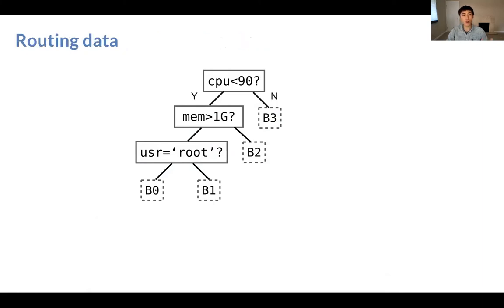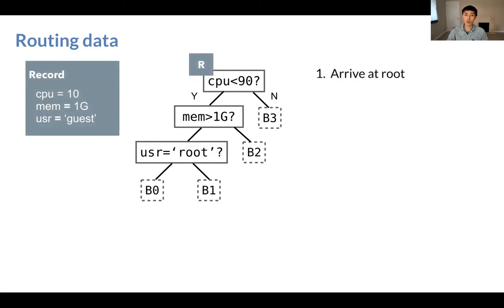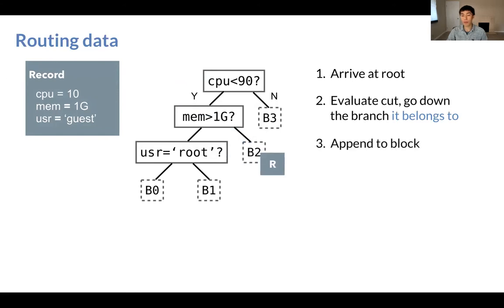The fundamental operation to do so is routing data records. Say we have a record that looks like this. The first step is to arrive at the root and check against the root cut, CPU less than 90, and this will evaluate to either true or false, depending on which branch the record belongs to. So we route the record down the branch it belongs to until it reaches a leaf, at which point we will append it to that block.